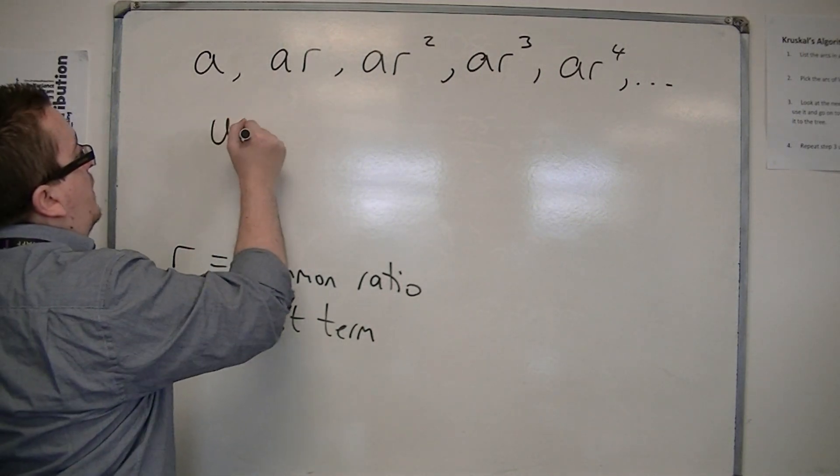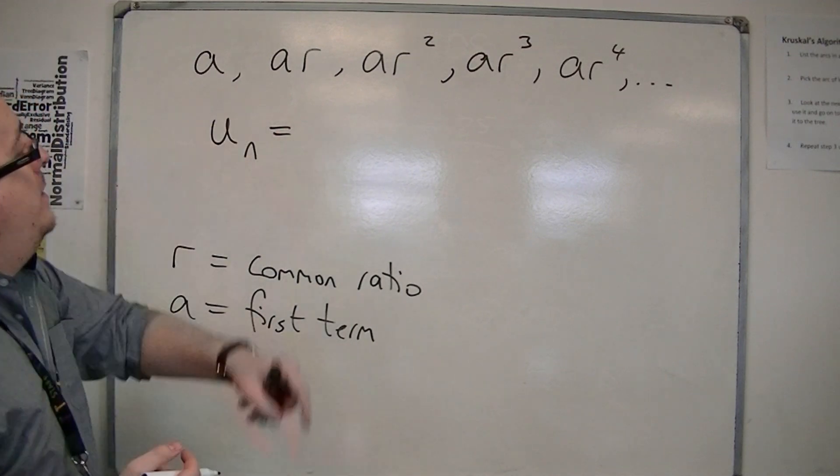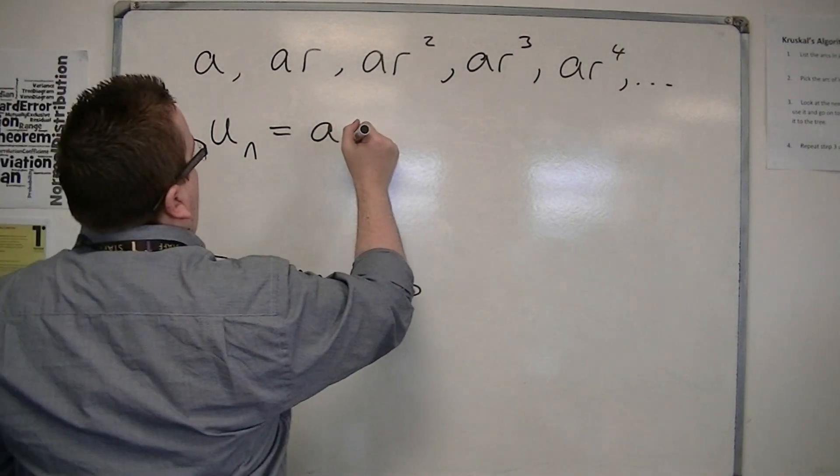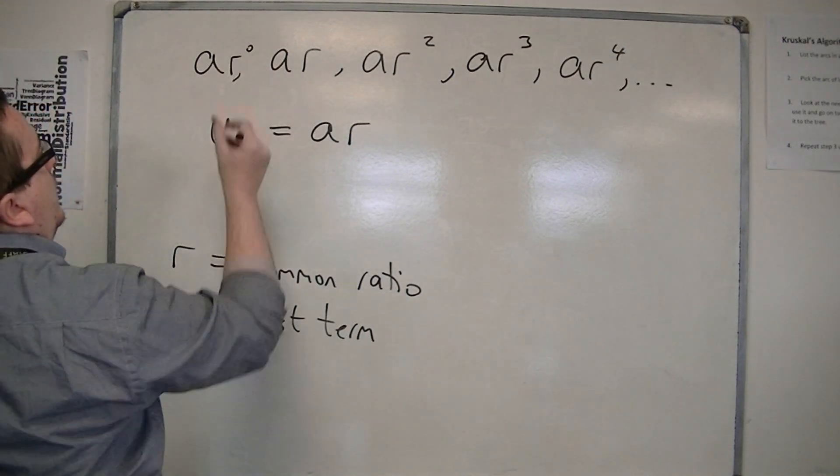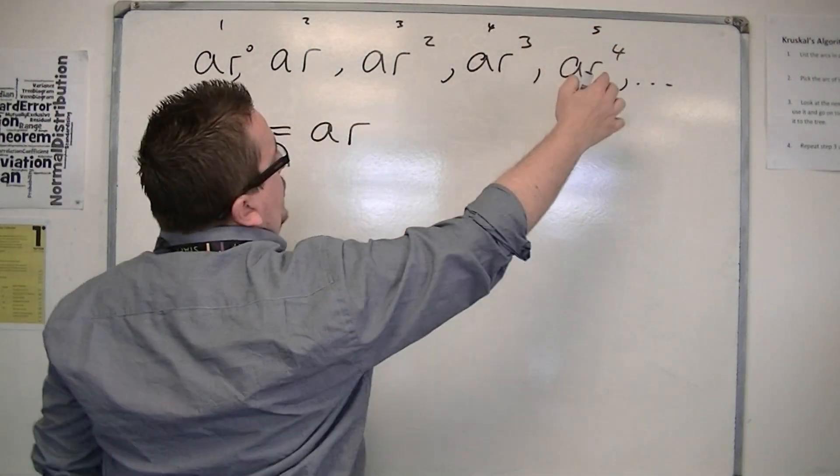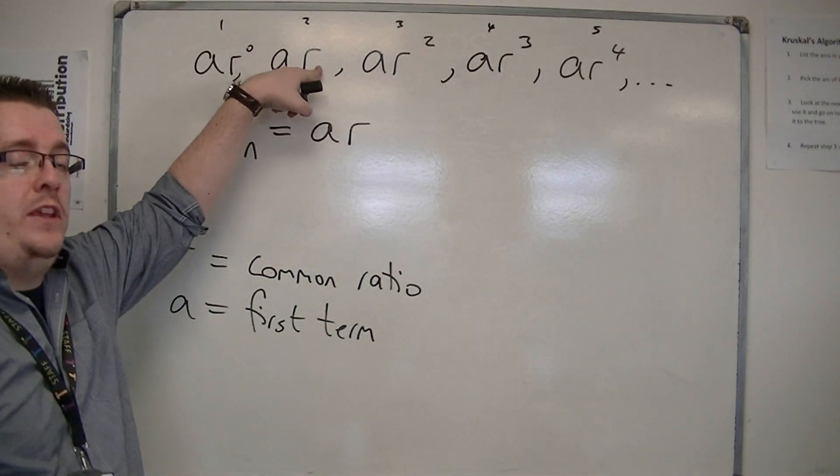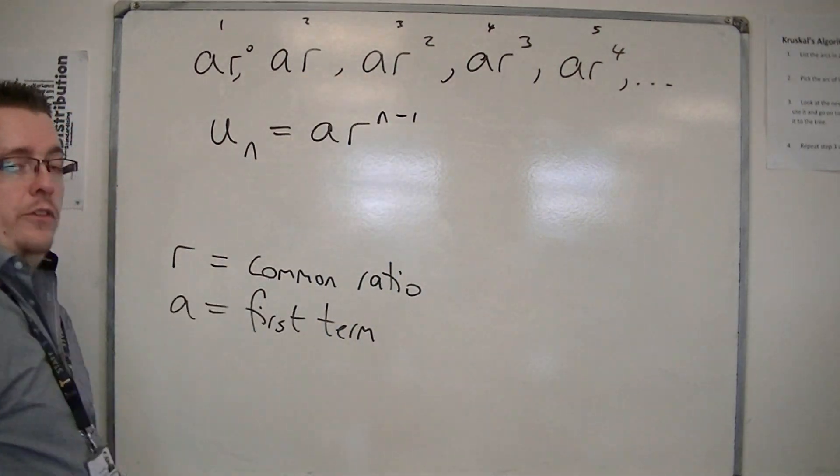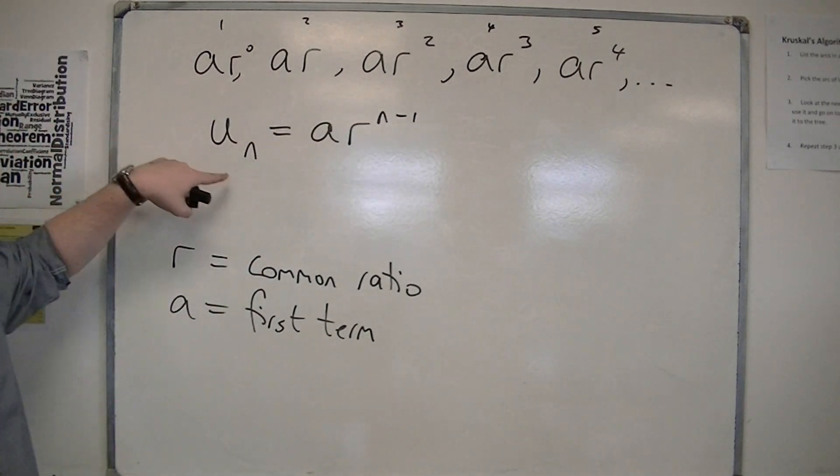And so we can write down what the nth term of that geometric sequence is. Each of the terms has an a in it, so the nth term will have to have an a in it, and then they all have an r, except for this one, but we could see that as r to the 0. So that's my first term, second term, third term, fourth term, fifth term, and you can see that the power of r each time is one less than its position in the sequence. So it should be r to the n minus 1. And this is the nth term for a geometric sequence.